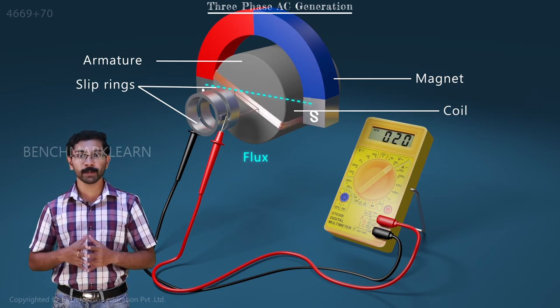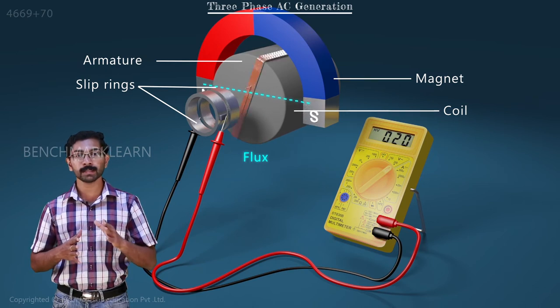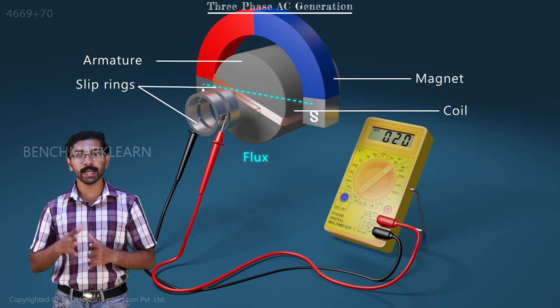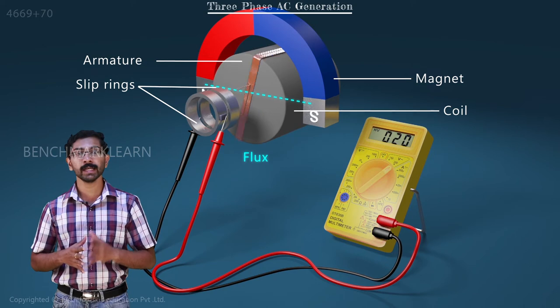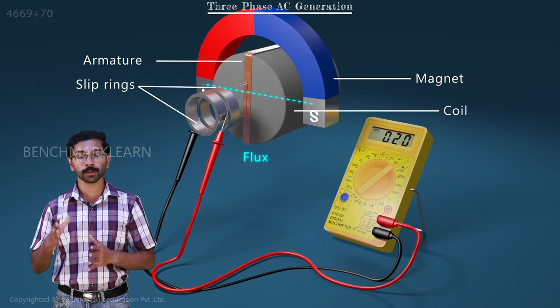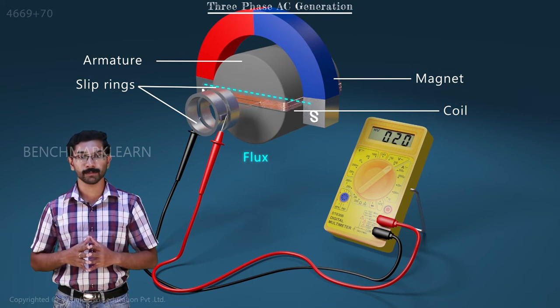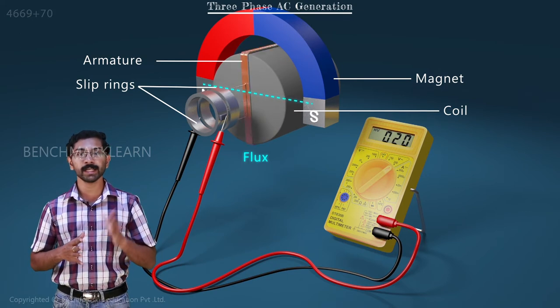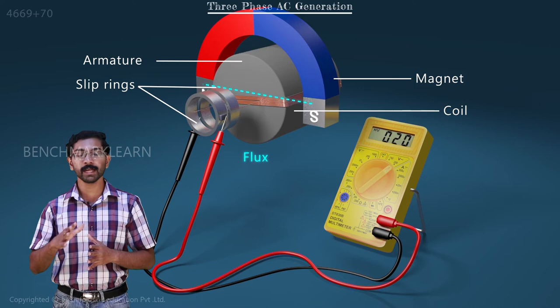When we rotate the armature, the coil cuts the magnetic flux and an EMF is generated at the ends of the coil. This can be connected to a load through a set of slip rings. The EMF generated in this case will be a single-phase AC.